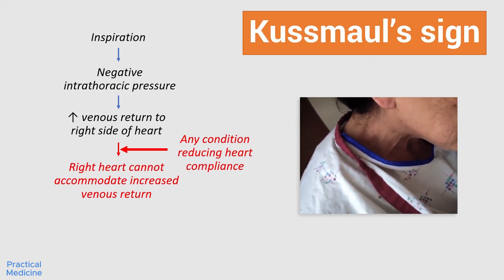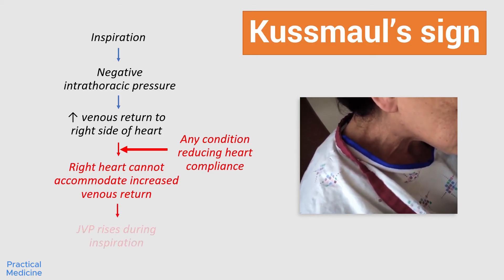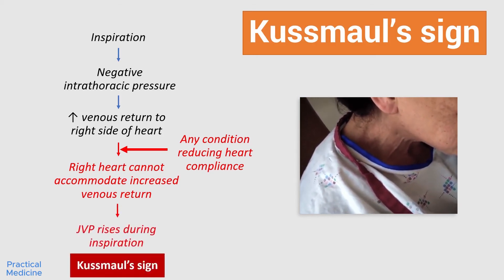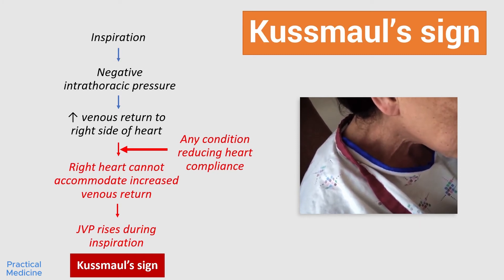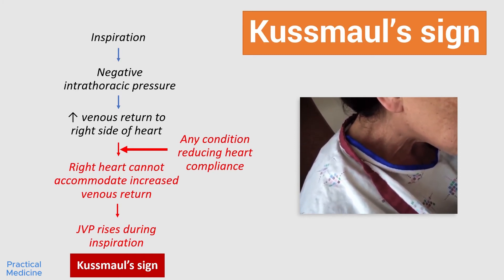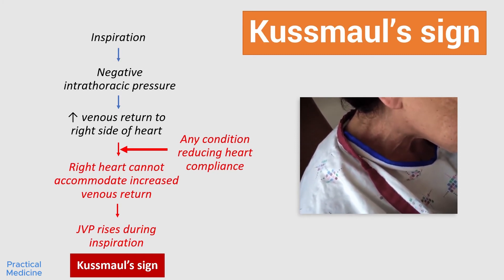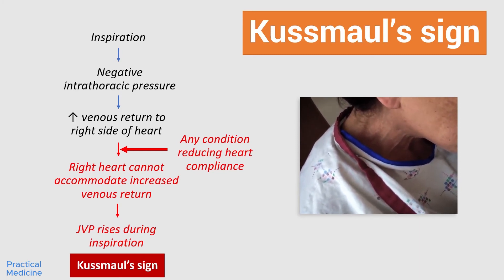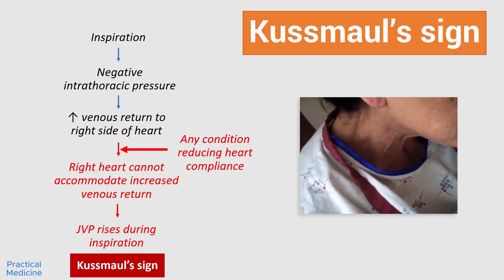This causes the blood to flow back up into the venous system, and there is a more readily visible resultant jugular vein distension.